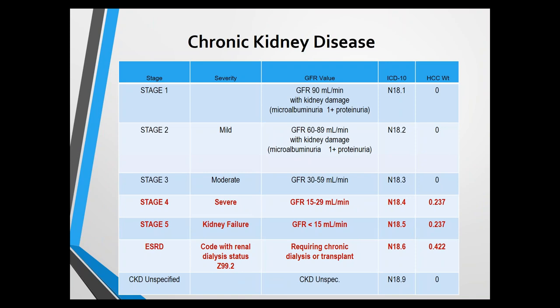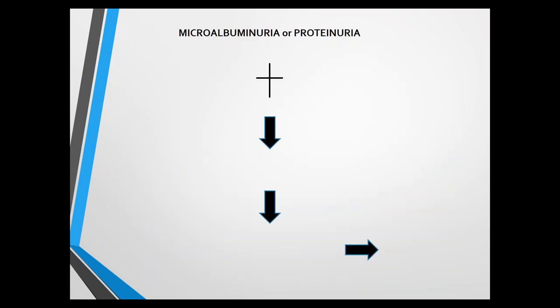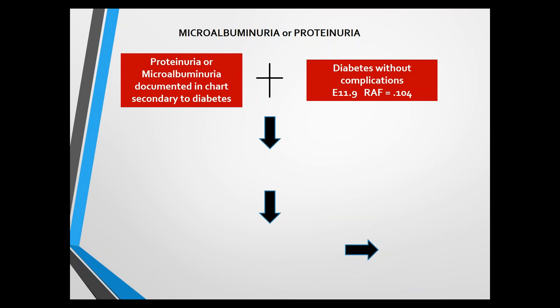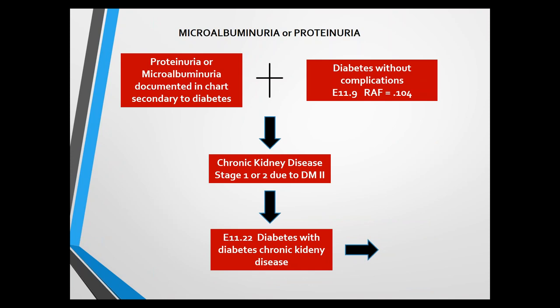For chronic kidney disease: stages 1, 2, and 3 do not RAF, but you still want to include them. Stage 4 (N18.4, GFR 15–29) and stage 5 / end-stage renal disease all RAF. If proteinuria or microalbuminuria is documented secondary to diabetes, you can code chronic kidney disease stage 1 or 2 secondary to type 2 diabetes using E11.22, tripling the RAF score and moving from HCC19 to HCC18 — from 0.1 up to 0.318. Anytime proteinuria or microalbuminuria can be linked as secondary to diabetes, use the diabetes with chronic kidney disease code.